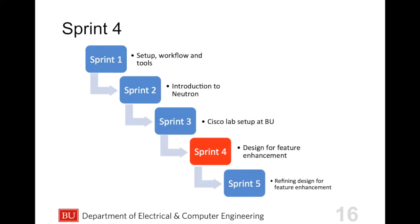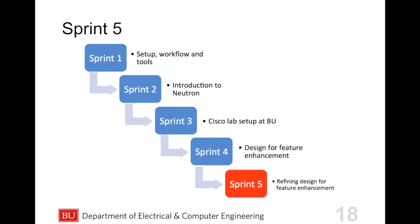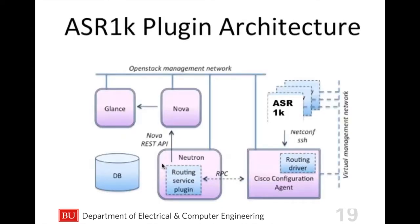Sprint 4 involved working on the design for feature enhancement. Our accomplishments included figuring out the template needed for the out-of-band configuration file, determining the proper position in the code to inject the out-of-band config file. We set up an SSH tunnel to debug controller A through a jump server, and we successfully converted the out-of-band config file into netconf snippets in the networking Cisco agent based on their interface levels. In sprint 5, we continued working on feature enhancements.